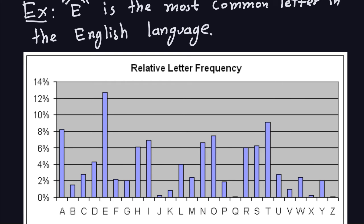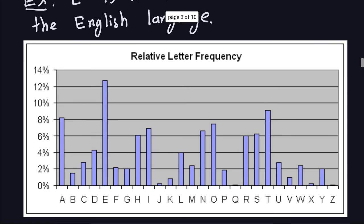This frequency table only works for English. As you can imagine, the letter frequency of other languages is different. German, Spanish, French, and other languages will have different letter frequencies and may include additional symbols. So when you decrypt a substitution cipher, you also need to identify the language, because depending on the language you'll need to apply a different frequency analysis.